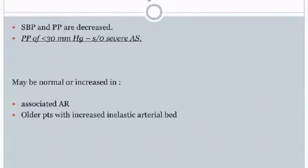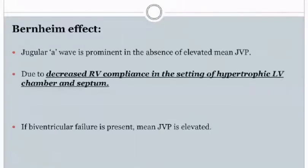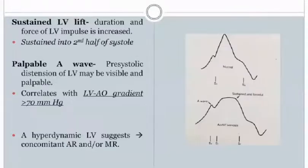Systolic blood pressure and pulse pressure are usually decreased in aortic stenosis. If pulse pressure is less than 30 mmHg, suspect severe aortic stenosis. Blood pressure may be normal or increased in severe aortic stenosis if there is associated aortic regurgitation or in older patients with an inelastic arterial bed. The jugular venous A wave is prominent in the absence of elevated mean JVP, due to decreased right ventricular compliance — the Bernheim effect. If biventricular failure is present, mean jugular venous pressure is elevated.